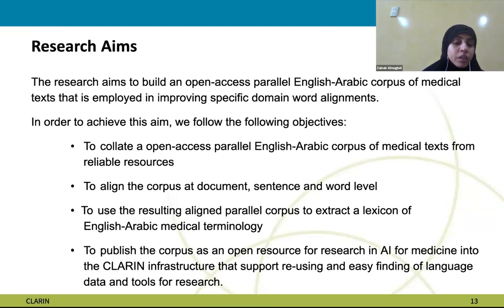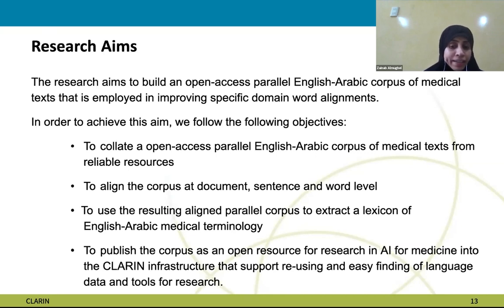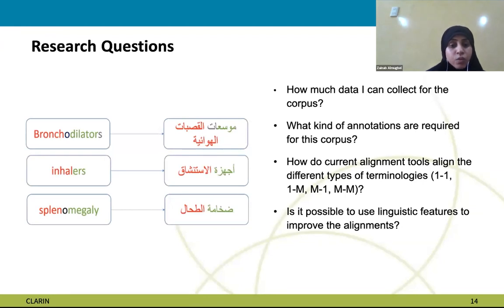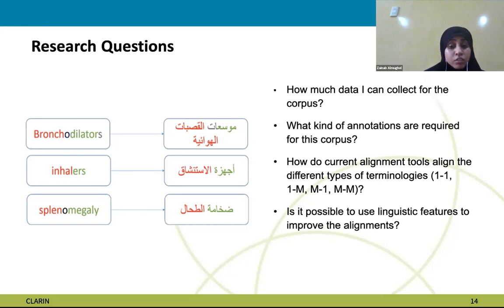The aim is to build an open-access English-Arabic corpus of medical text to improve specific domain word alignments and translation. We will collect open-access medical texts from reliable resources such as the World Health Organization or Ministry of Health, then align the corpus at the sentence and word level. We will also extract a lexicon of English-Arabic medical terminology, since there is no open-access lexicon available for direct use in NLP research. This corpus will be published in the CLARIN infrastructure. The approximate data target is about 1.5 million words.